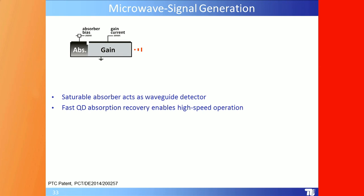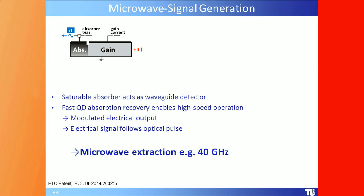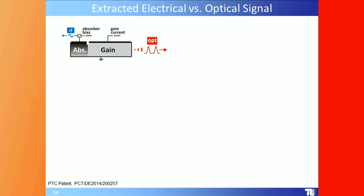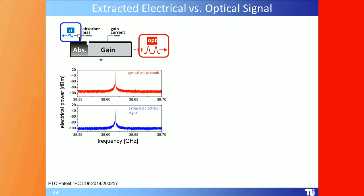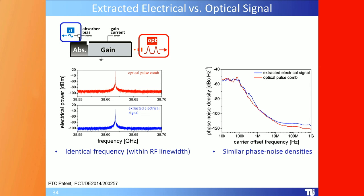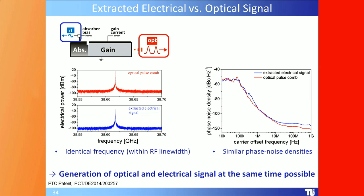This approach can also be used for microwave signal generation. Extracting the microwave signal at, say, 40 GHz, comparing electrical and optical signals shows they are identical in frequency and phase noise density. Generation of optical and electrical microwave signals is simultaneously possible with a very simple device.